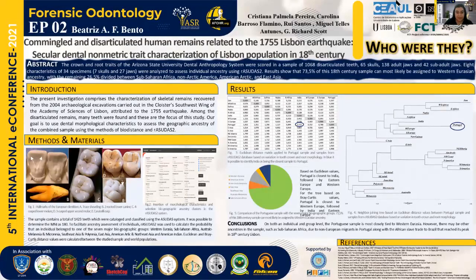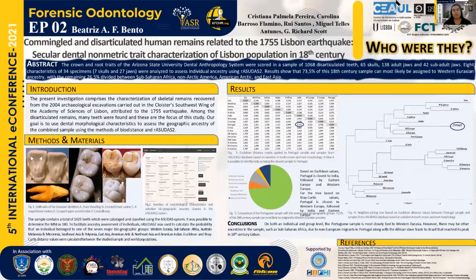As you can see in figure two, this is the software used. However, because not all specimens presented enough characteristics, we could not use the whole sample. We used only eight characteristics from 34 specimens — seven skulls and 27 jaws — to assess each individual's ancestry.